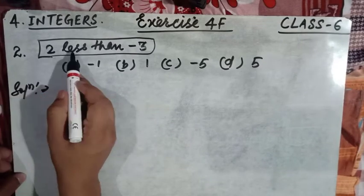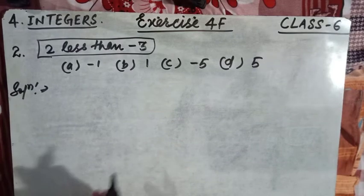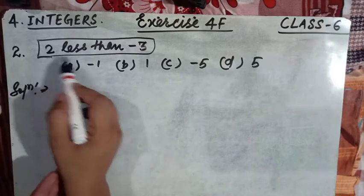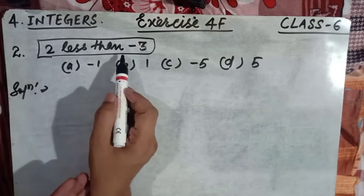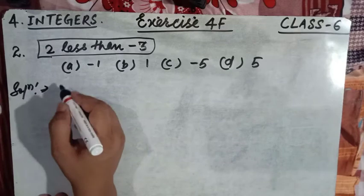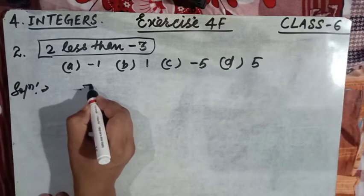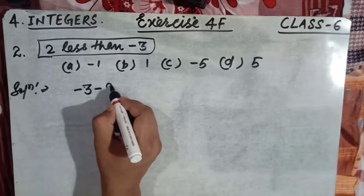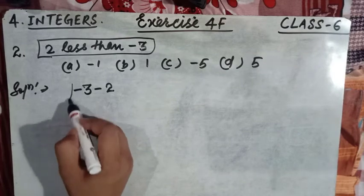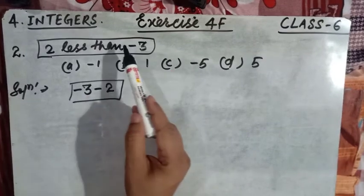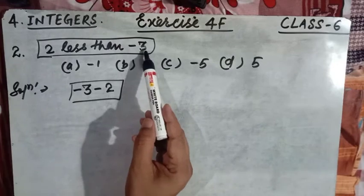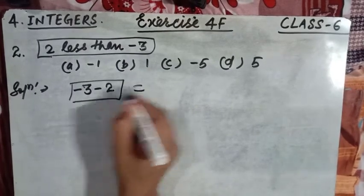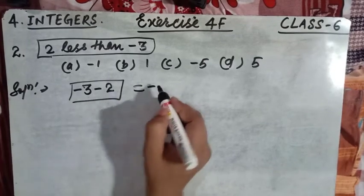The statement says 'two less than minus three.' That means the required number is two less than minus three. For example, 'two less than minus three' means we have to subtract two from minus three. So the expression becomes minus three minus two.